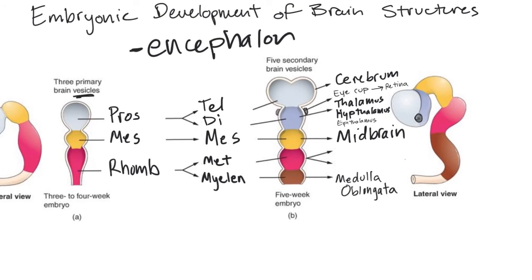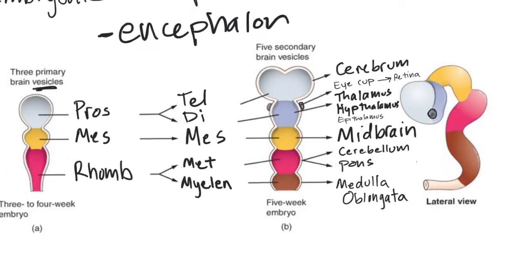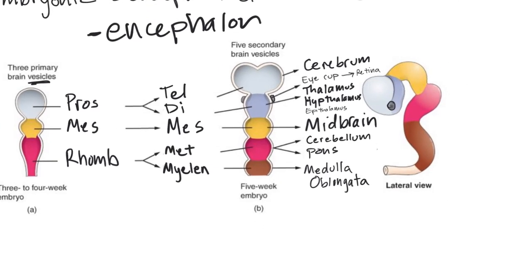The metencephalon then splits into two structures: the cerebellum, which in the adult brain is about 10% of the brain — so quite a large structure — and the pons. So if you were labeling these structures on a subdivided embryonic brain diagram, you'd place the telencephalon, diencephalon, mesencephalon, metencephalon, and myelencephalon in their respective positions.